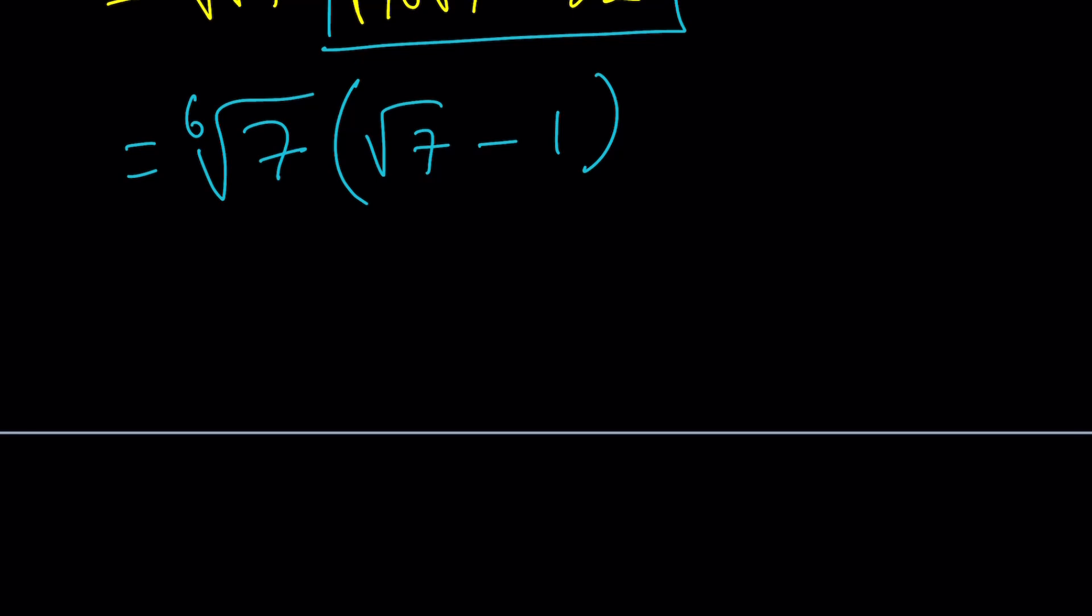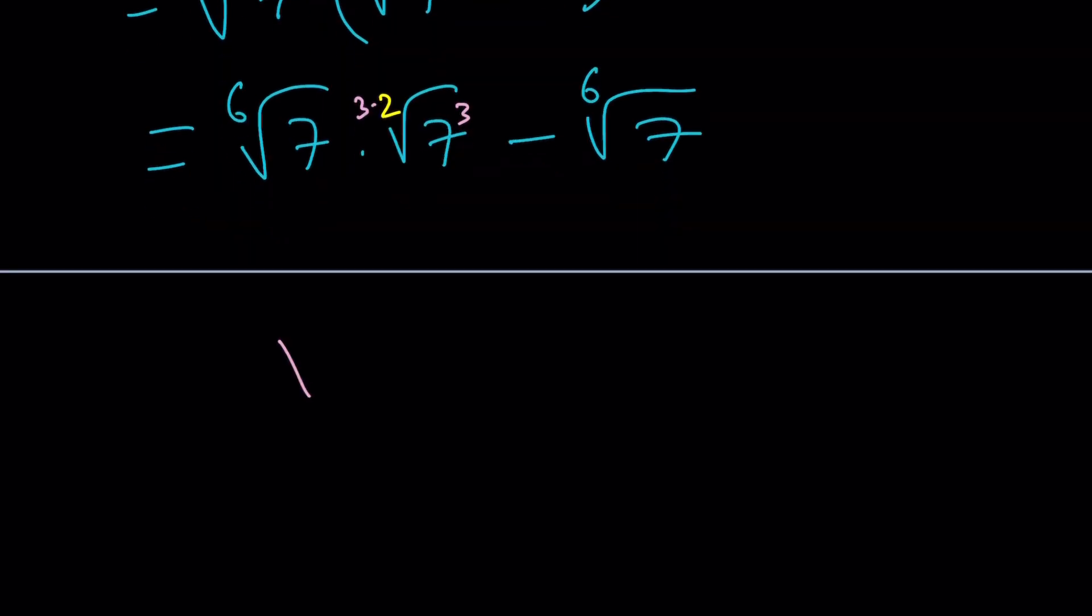Now, we're going to go ahead and distribute this. So it's going to be cube root of 7 times square root of 7 minus 6th root of 7. Wait a minute. I can still do something about this. This is kind of like a hidden 2. I can go ahead and actually multiply this by a 3 and put a little cube here. And that's going to work. That's how radicals work. So now we have under the radical the 6th root. We have 7 times 7 to the 3rd. And that just becomes the 6th root of 7 to the 4th power.